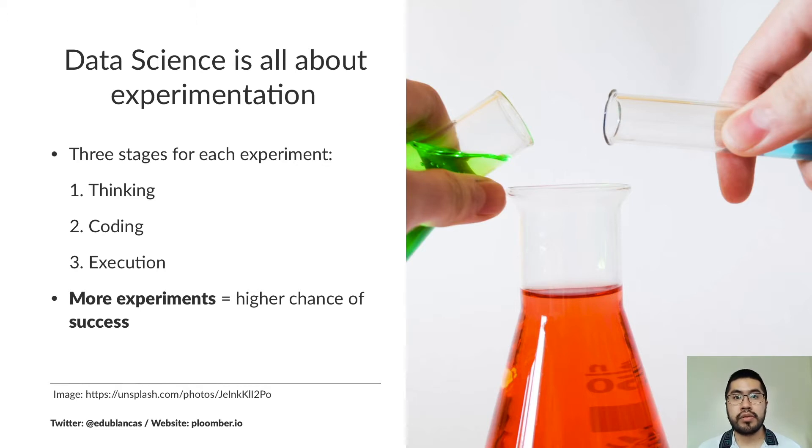Data science is all about experimentation. When we start a project, we may try a new feature, for example, to see if it improves model performance, or simply change the colors or the scale in a chart to communicate results easily. Each experiment that we try goes through three different stages. We have to think what we are going to do, we code it, and finally, we execute it.